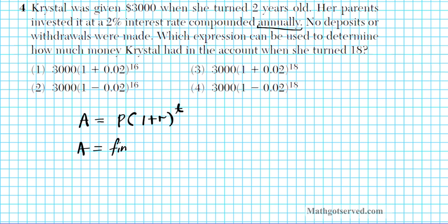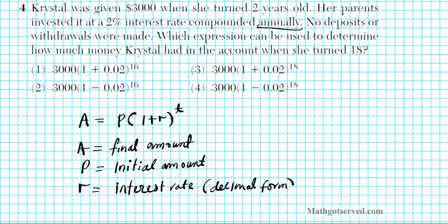So let's go over what these different variables mean and then we will apply it to this problem. So A represents the final amount, P is the initial amount or principal, it's called initial amount, what you started with. R is the interest rate in decimal form, and what do you think t is? T is time. Let's apply these, let's find out what these values are in this problem here.